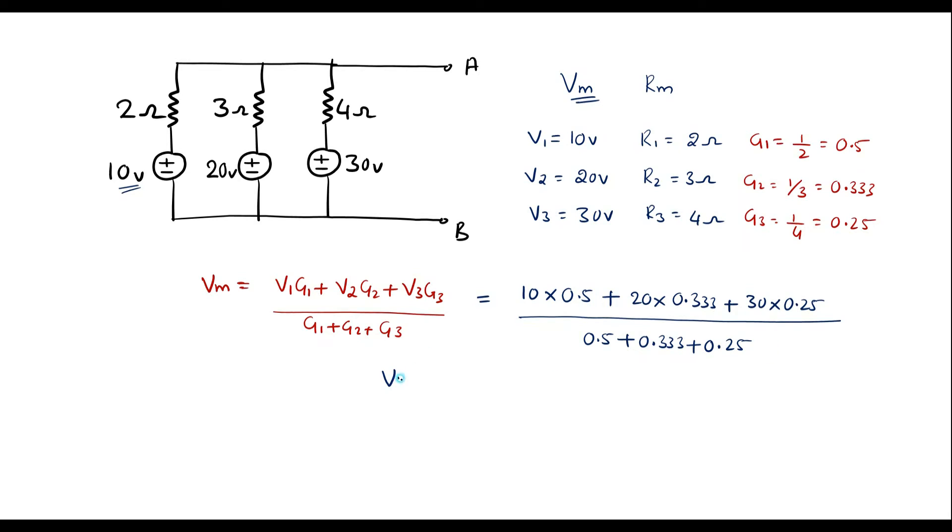Let me simplify this further. Vm equals, the numerator gives 19.16 divided by denominator 1.08. Solving this gives 17.68 volts. Therefore, Vm is equal to 17.68 volts.